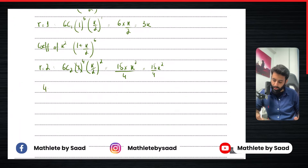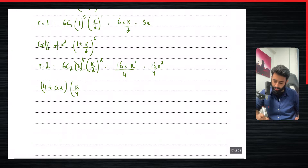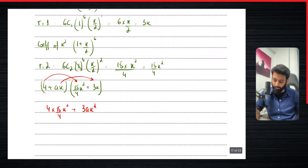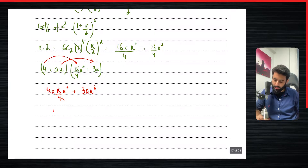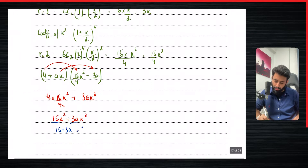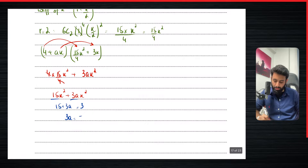Now we know the terms to multiply (4 + ax) with to get x squared: those are (15/4)x² and 3x. So: 4 × (15/4)x² gives 15x², and ax × 3x gives 3ax². Simplifying: 4 and 4 cancel, leaving 15x² + 3ax². Taking out x², the coefficient is 15 + 3a, and according to the question this equals 3. So 3a = 3 − 15 = −12, which gives a = −4.